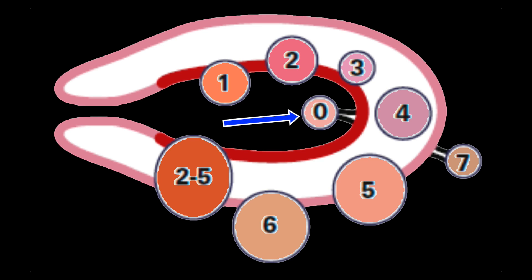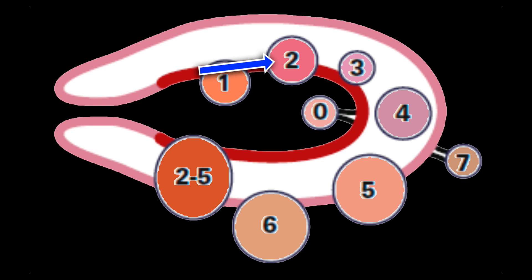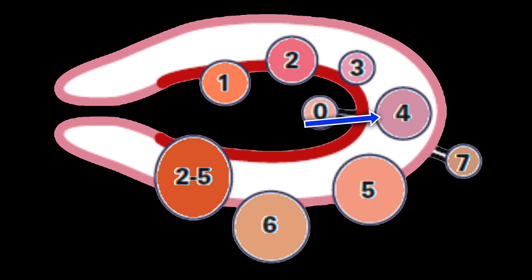Type 0 is an intracavitary fibroid — that is, a pedunculated submucous fibroid entirely within the uterine cavity. When less than 50% of the submucous fibroid diameter is lying within the myometrium, it is called a Type 1 fibroid. When 50% or more of the submucous fibroid diameter lies within the myometrium, it is called a Type 2 fibroid. A submucous fibroid that abuts the endometrium without any intracavitary component is called a Type 3 fibroid. Type 4 fibroid is an intramural fibroid lying entirely within the myometrium without extension to either the endometrial surface or to the serosa.